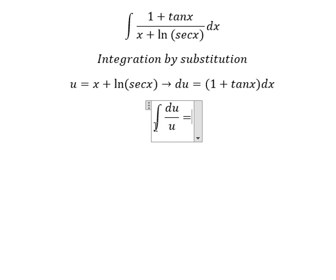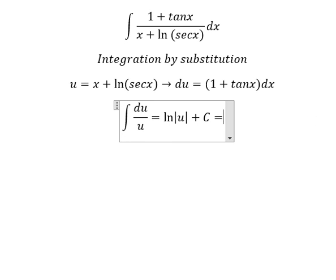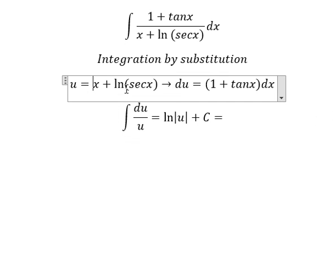The integration becomes the integral of du over u, which equals ln of the absolute value of u plus C. Substituting u back, that's ln of x plus ln of secant x plus C.